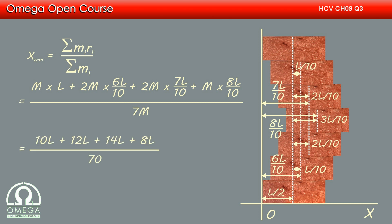Simplifying, we get 10L plus 12L plus 14L plus 8L by 70, that is 44L by 70 or 22L by 35. This is our answer.